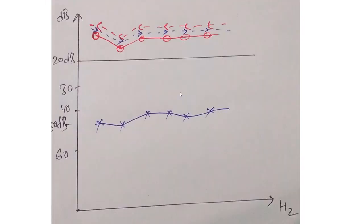Looking at another audiogram: the right ear shows both air and bone conduction above 20 decibels — normal. In the left ear, the continuous line (air conduction) is decreased, but the dotted line (bone conduction) is normal. Decreased air conduction with normal bone conduction is classical for conductive hearing loss. The air-bone gap is more than 15 decibels, confirming left-sided conductive hearing loss. This could result from any pathology in the external or middle ear of the left ear.